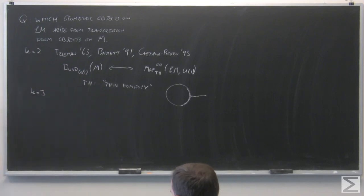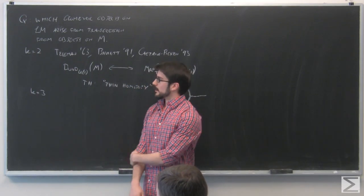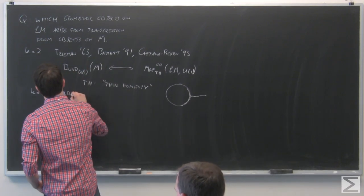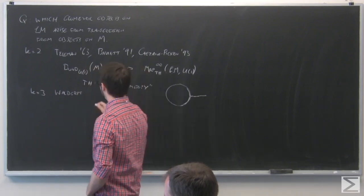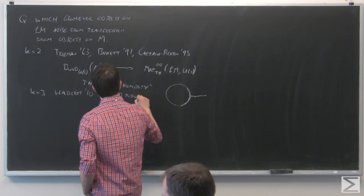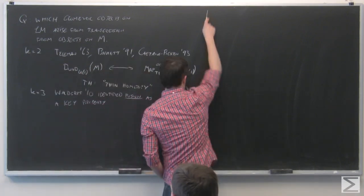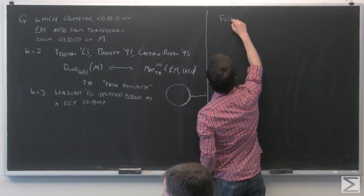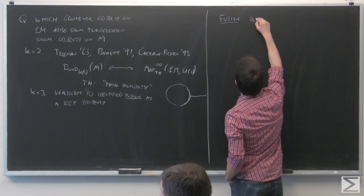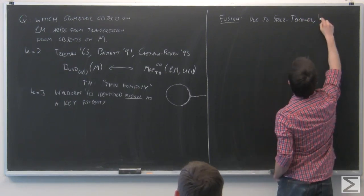In the case k equals 3, we ask which principal U(1) bundles on the loop space arise from some kind of transgression from gerbes on the manifold itself. Conrad Waldorf in 2010 identified the key property of fusion. For functions, the concept of fusion goes back to Stoltz and Teichner; for bundles, the definition of fusion is due to Waldorf.